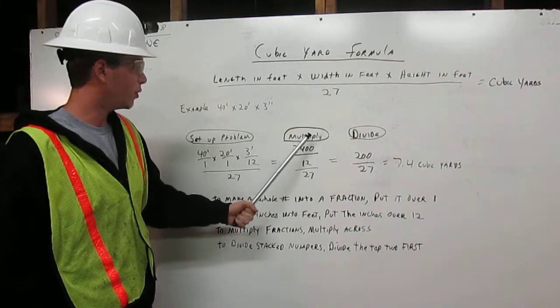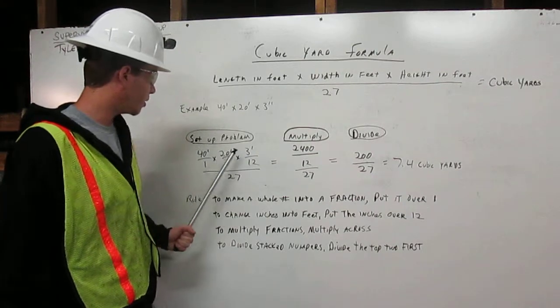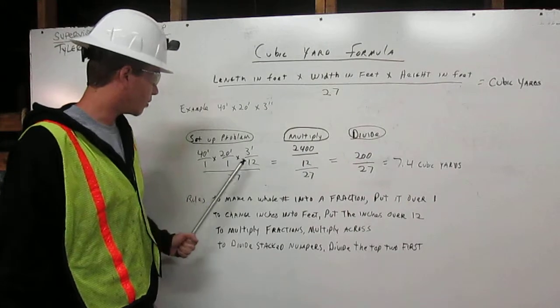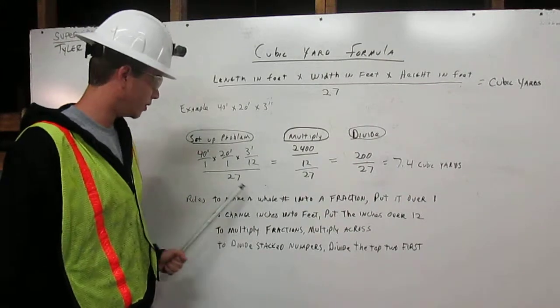Now we are going to multiply: 40 times 20 times 3 gives us 2400. 1 times 1 times 12 gives us 12. I am going to bring the 27 over.